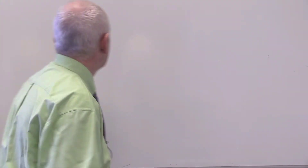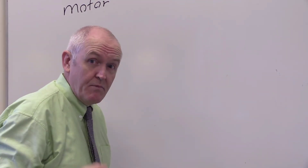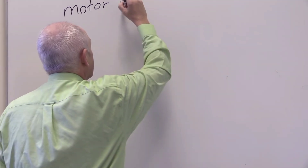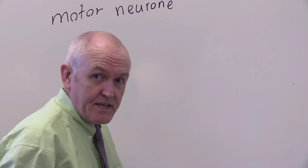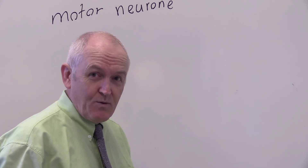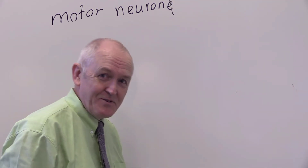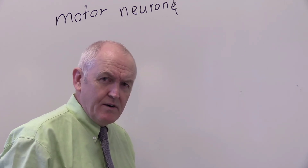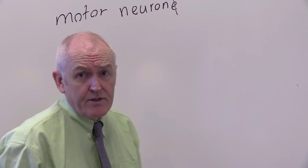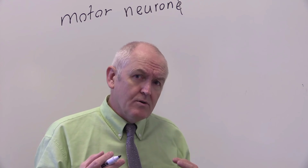I want to start off with a motor neuron. 'Motor' means to do with movement, and 'neuron' is a nerve cell — a neuron is an individual nerve cell. If you're watching in the US you don't put any 'e' on the end, whereas in England we do. So a motor neuron is an example of an individual nerve cell.